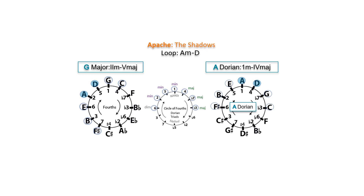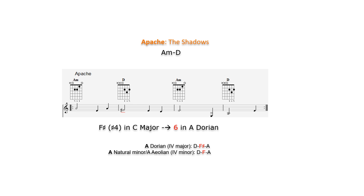Apache E by the Shadows uses an A minor / D major loop, which is a 2-5 in G major and a 1-4 progression in A Dorian, the 2nd mode of G major. A minor and C major share the same key signature with no sharps or flats. Raising the 4th in C major from F to F sharp indicates that we're in A Dorian, the 2nd mode of G major, and not A Aeolian, the 6th mode of C major.